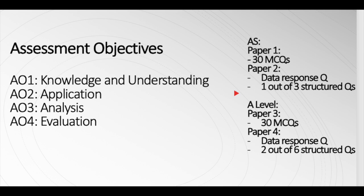For AS, there are going to be two papers: paper 1 and paper 2. For paper 1, there will be 30 MCQs, all have to be attempted. For paper 2, there is going to be first a compulsory data response question which is a case study, and three structured questions out of which one is to be attempted.